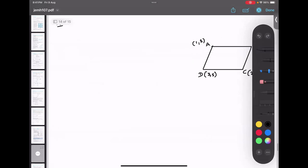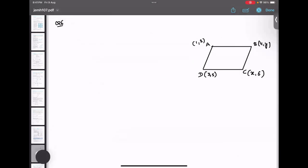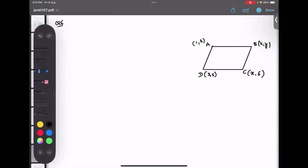As they have told us that it is a parallelogram, we have to use the properties of the parallelogram. Can you tell me what are the different properties? Opposite sides are parallel and diagonals bisect each other. Opposite sides are parallel and equal also. Yeah, equal also. And diagonals bisect each other.